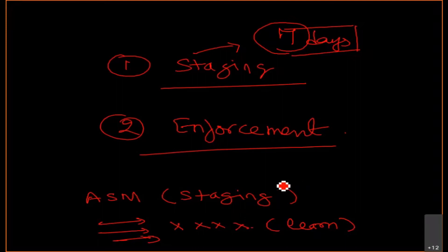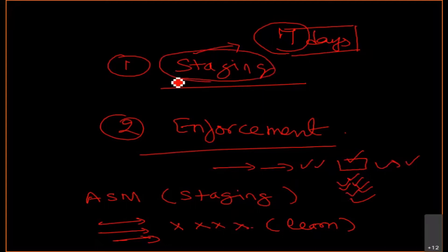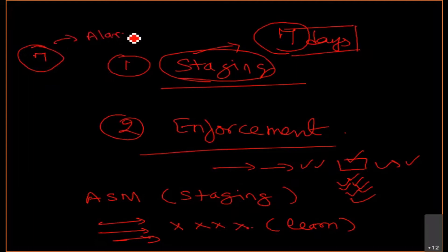Staging is a test period and your ASM will not block any of the things. During this time it will be learning all of the traffic, checking what kind of requests contain what kind of entities or items, and it will keep on learning those items based on its learning score, which we will be covering later. So staging is a test period — by default seven days — and into this test period your security policy will not block anything.